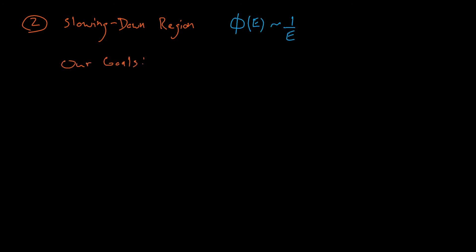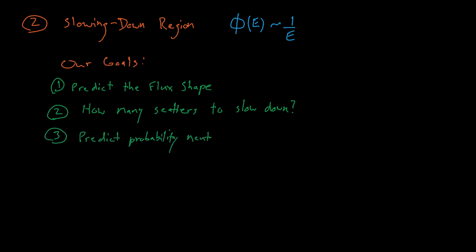But the slowing down range is where things get interesting. As we discuss this regime, we'll start by proving that the flux spectrum in the slowing down range roughly follows a 1 over E distribution, and in the future we'll discuss how many scatter events are, on average, necessary for a particle to slow down, and then we'll also predict how many neutrons are absorbed by resonances while they slow down.